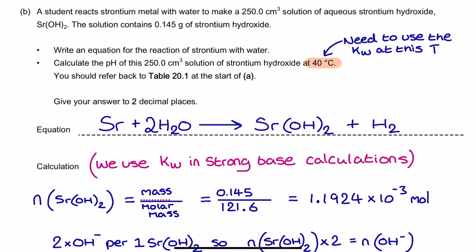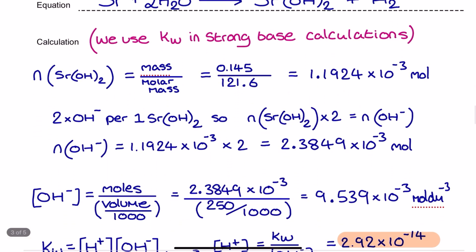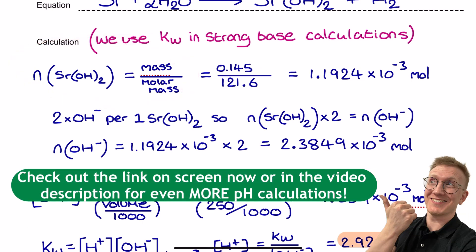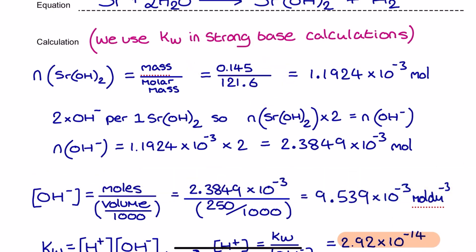Now, moving on to the calculation. We know we've got a mass value of the strontium hydroxide, so first off, I'm going to find out how many moles of strontium hydroxide I've got by doing mass divided by molar mass, which is 0.145 divided by 121.6. That gives me a mole value of the strontium hydroxide in the 250 centimeter cubed solution, which is 1.1924 times 10 to the power of minus 3. Make sure you're not rounding up excessively here. I have seen people try and round up to like 1.2 times 10 to the power of minus 3, so make sure that isn't you.